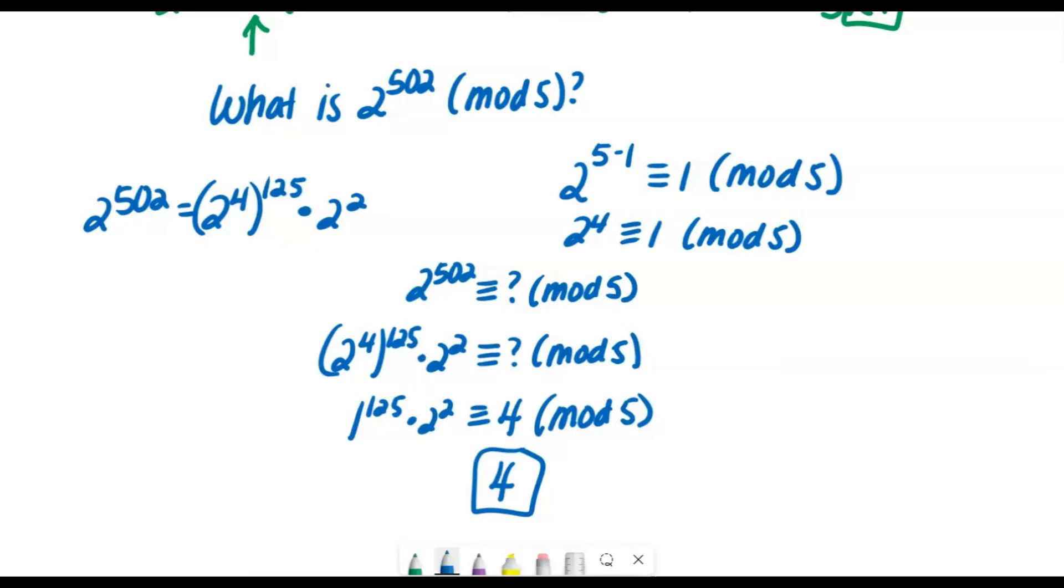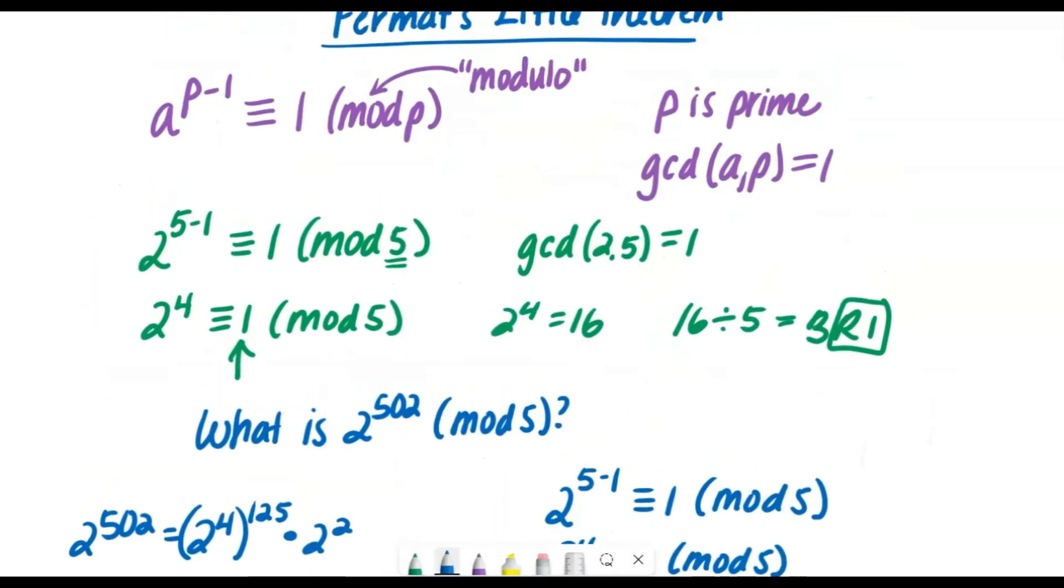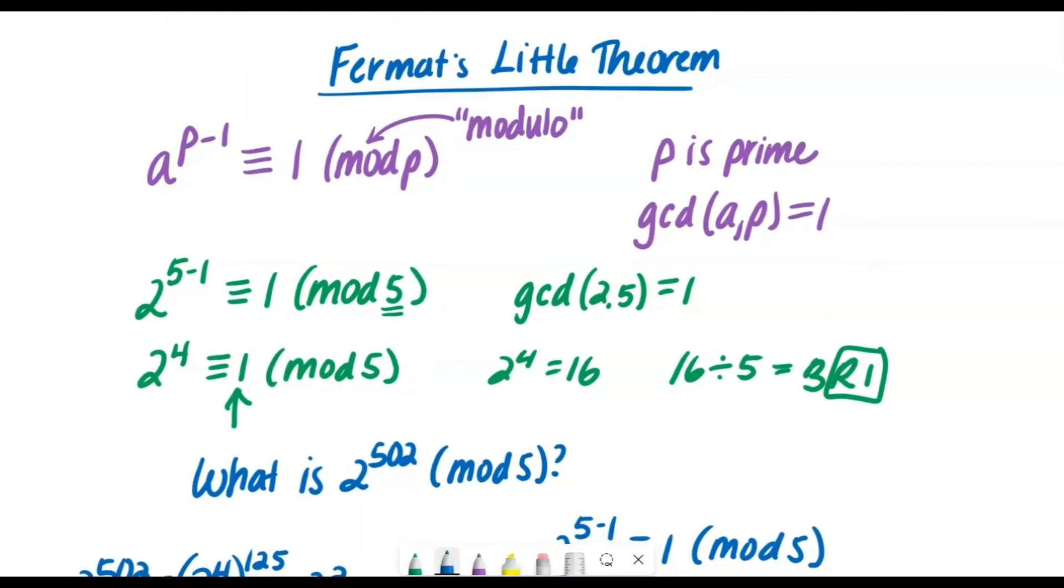And that's Fermat's Little Theorem. I love this because it allows us to do something that the calculator cannot, which is pretty powerful. So once again, Fermat's Little Theorem tells us that a to the power of p minus one is always congruent to one in mod p as long as p is prime and the greatest common divisor of a and p is one.